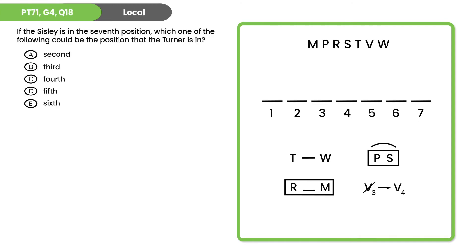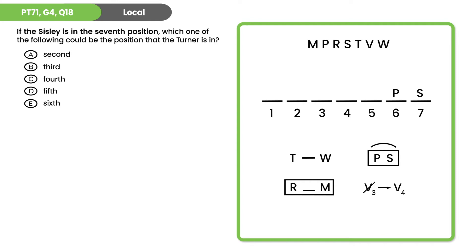This next question is a local question — they're giving us a new piece of information in the question stem. The key to doing well on local questions is to follow the inference chain as far as you can from that new piece of information, but don't go any further than you know. Only plug in things you absolutely know. When we put S into the seventh position, we know that P must be in the sixth position, but it's hard to make any progress from here.